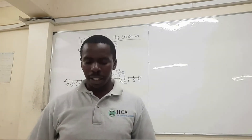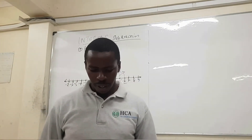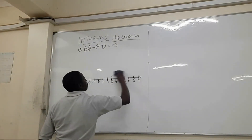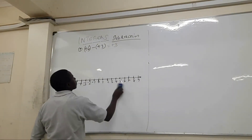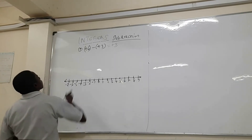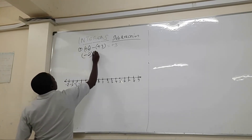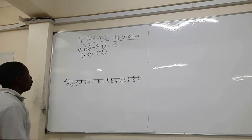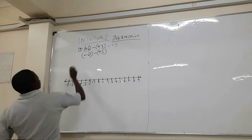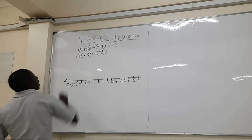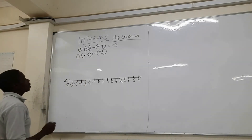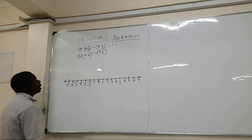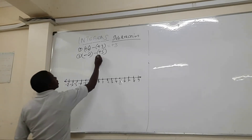Another example: minus two minus plus five. We want to use the number line to get the value of minus two minus plus five. The first step is to get the two numbers on the number line — minus two is here, then plus five is there.